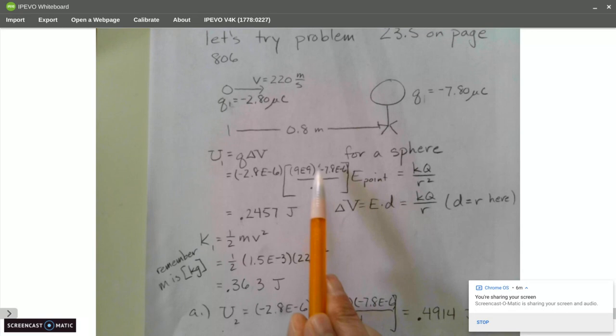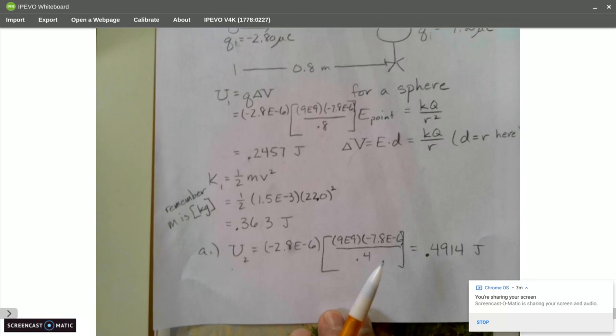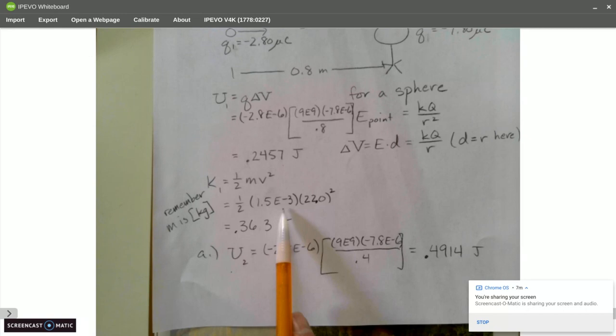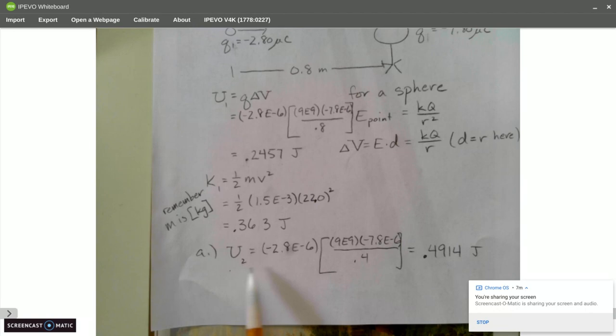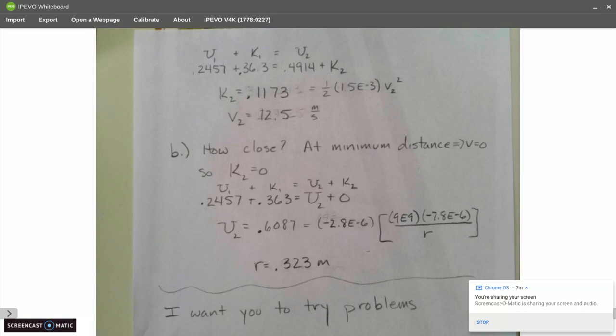So I take the first point would be 0.8 meters away. And I know that the electric field of a point charges that. So I used KQ over R. I come up with 0.2457 joules. Delta V is equal to E times D here. And so that's the equation that comes out. I can find the kinetic energy at the beginning by using one half MV squared. Please remember to do it in kilograms. So I used E negative 3. I get 0.363 joules. Now I'm going to find the potential energy when it's 0.4 meters away. And it is 0.4914 joules.